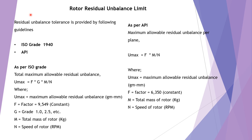Now, what are the permissible or allowable rotor tolerances? There are two standard guidelines used. One is ISO grade 1940 and another is API guidelines. As per ISO grade, total maximum allowable residual unbalance U_max equals F × G × M divided by N, where U_max is maximum allowable residual unbalance in gram·mm, F is the constant factor 9549, G is the grade (e.g., 1, 2.5, or another number), M is total mass of rotor in kg, and N is speed in rpm.